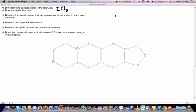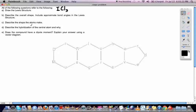Alright, let's look at another example. We've got ICL3, and what we're going to do is we're going to do the Lewis dot structure first.